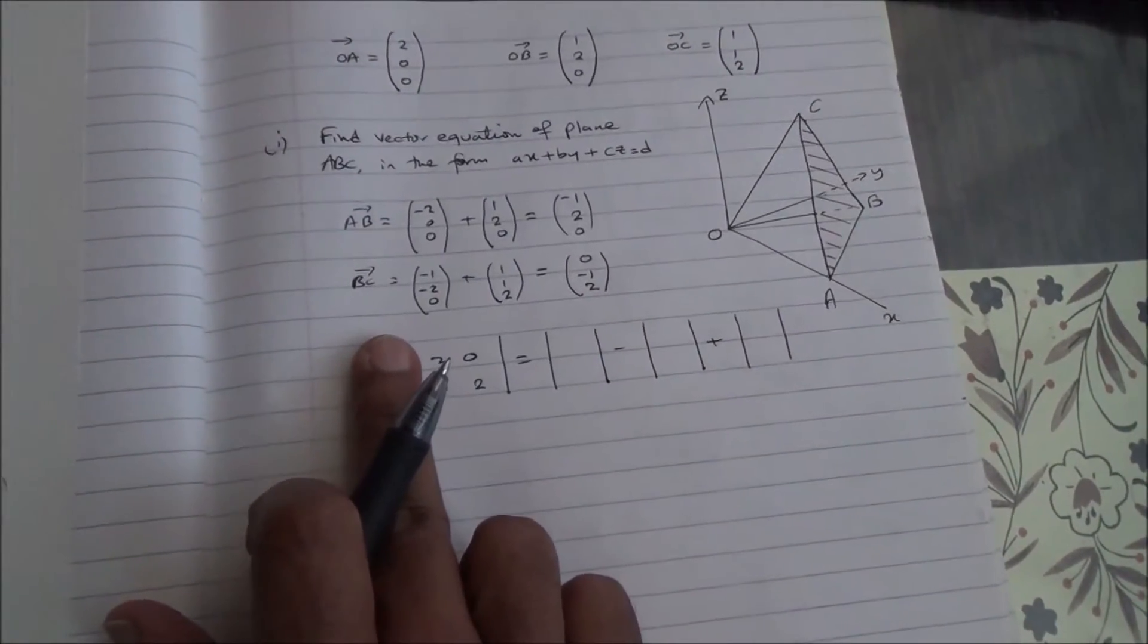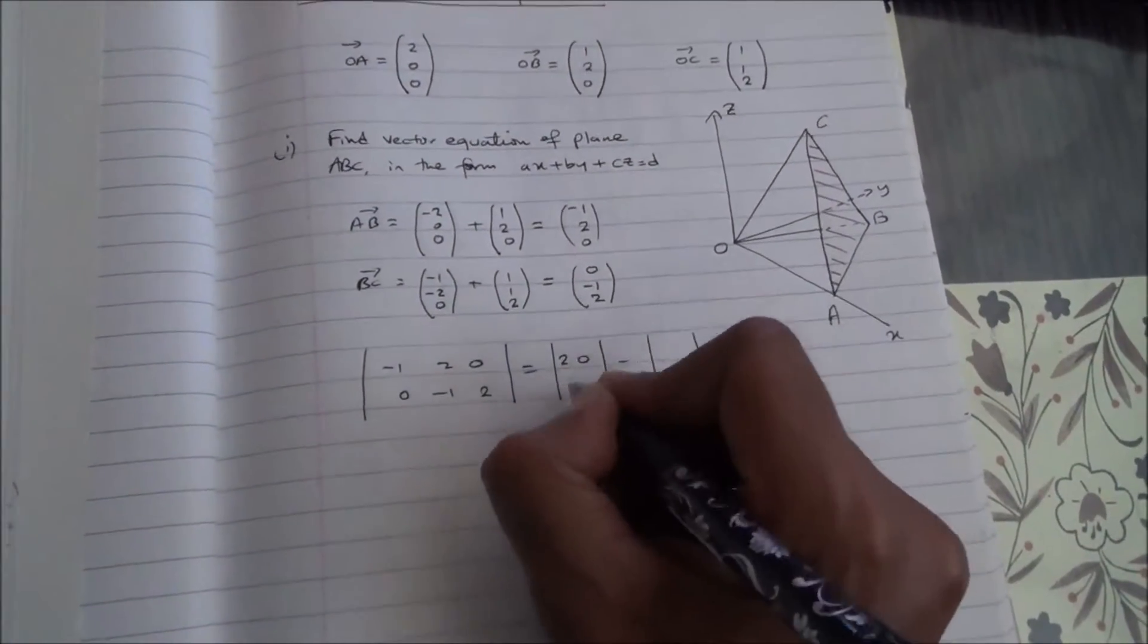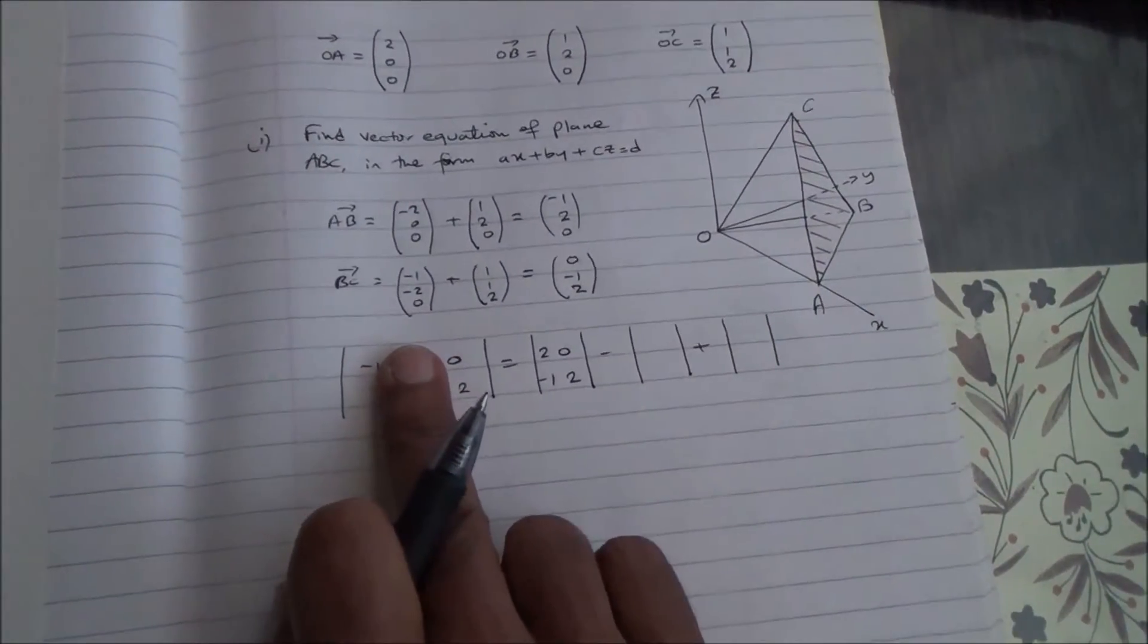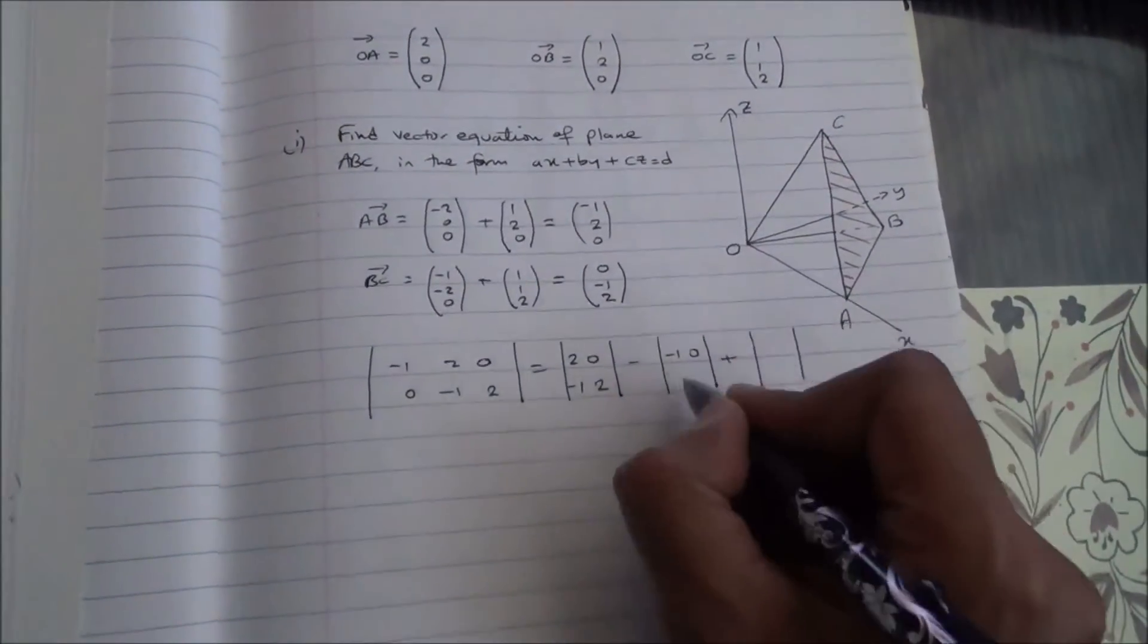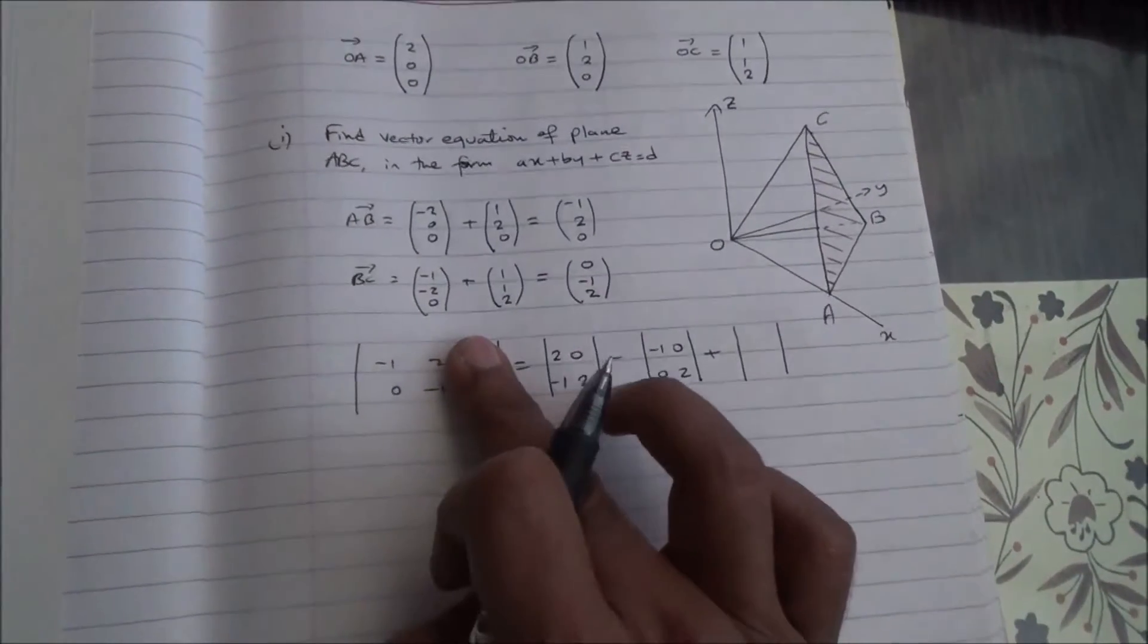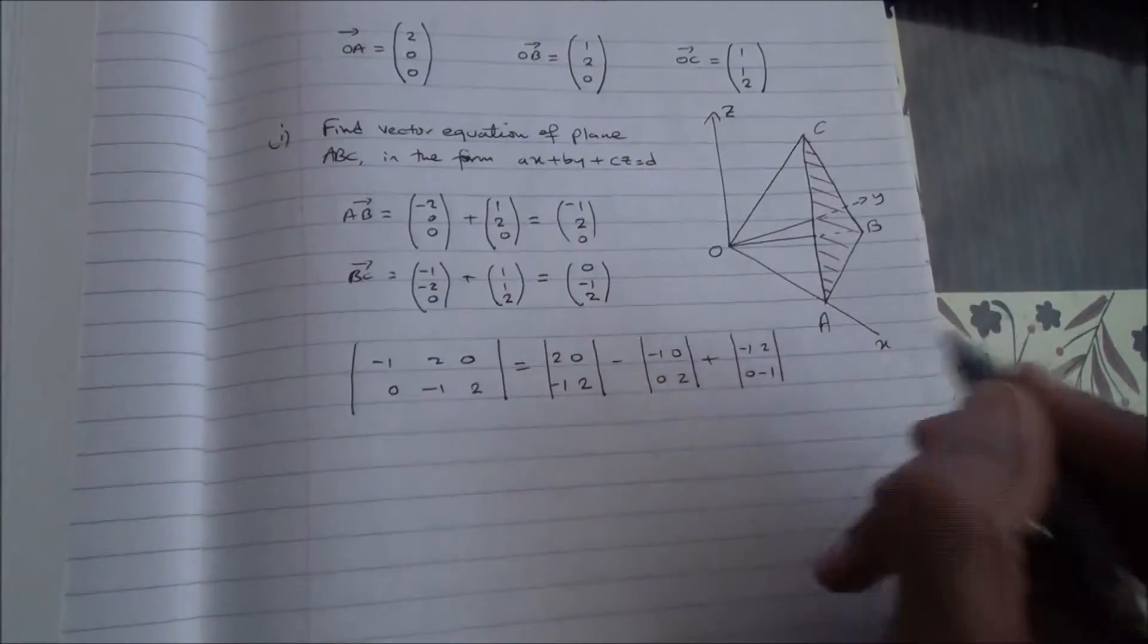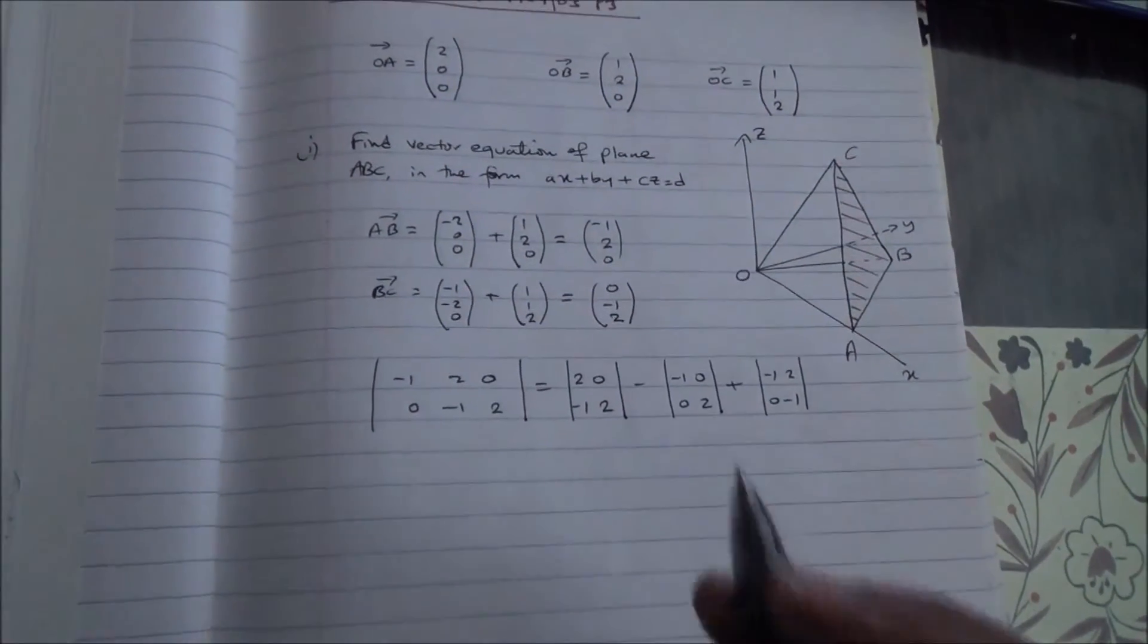So, I've got 2, 0, minus 1, 2, 2, 0, minus 1, 2. Then, 1, 0, minus 1, 0, 0, 2, minus 1, 0, 0, 2. Block this one, minus 1, 2, 0, minus 1, minus 1, 2, 0, minus 1. Okay, so from here,